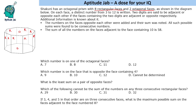On each face, a distinct number from 3 to 12 is written. Two digits are said to be adjacent or opposite each other if the faces containing the two digits are adjacent or opposite respectively. For example, if you look at this face and this face, these are opposite faces.